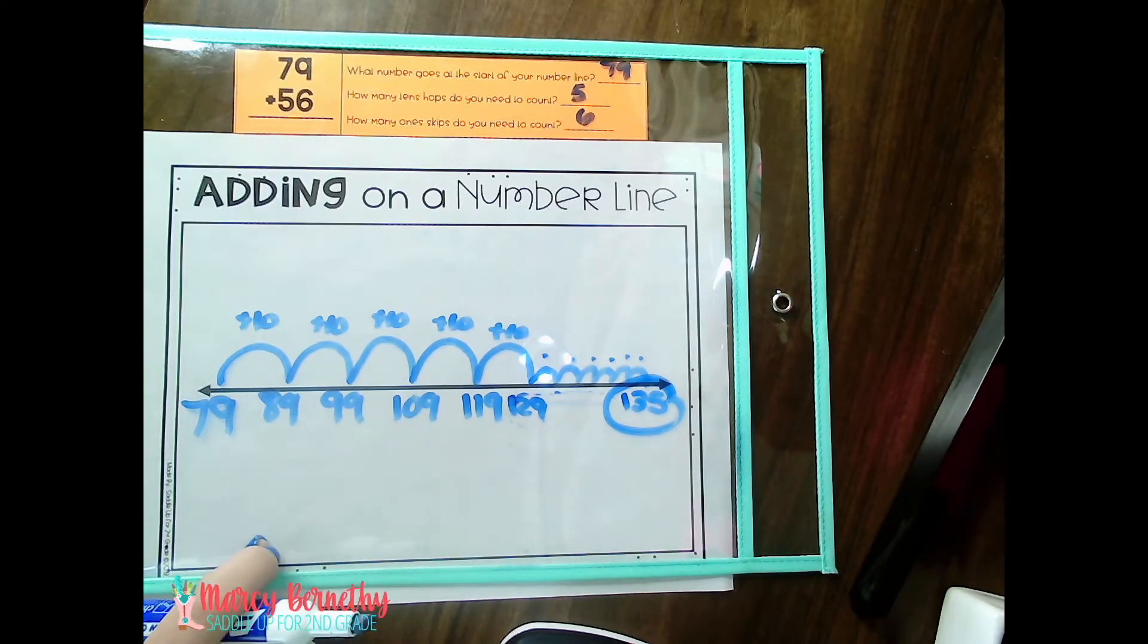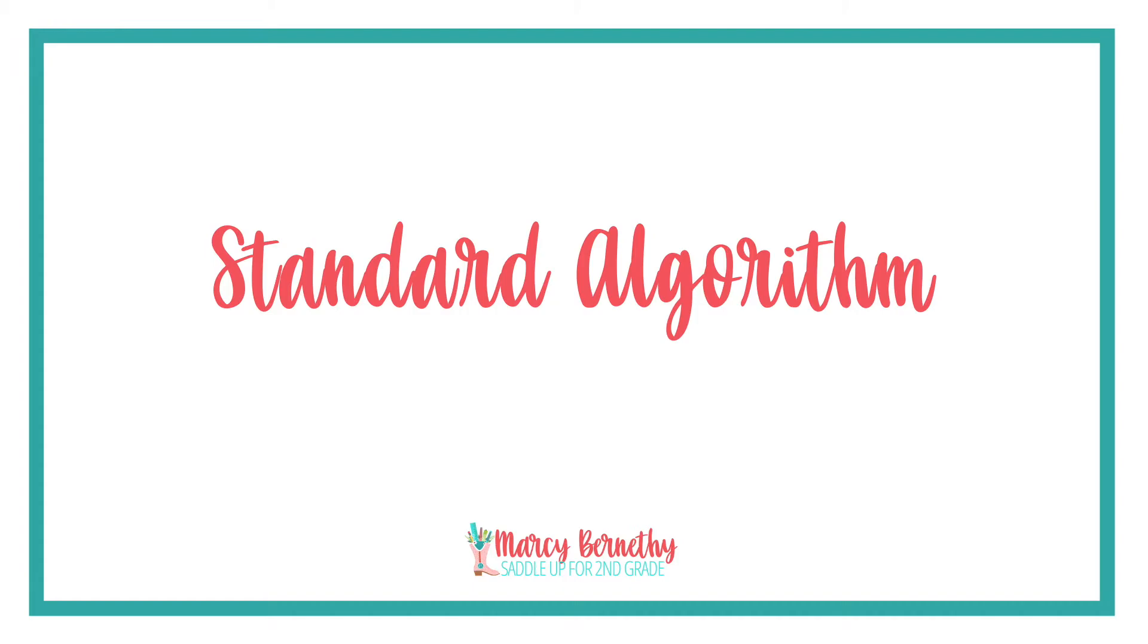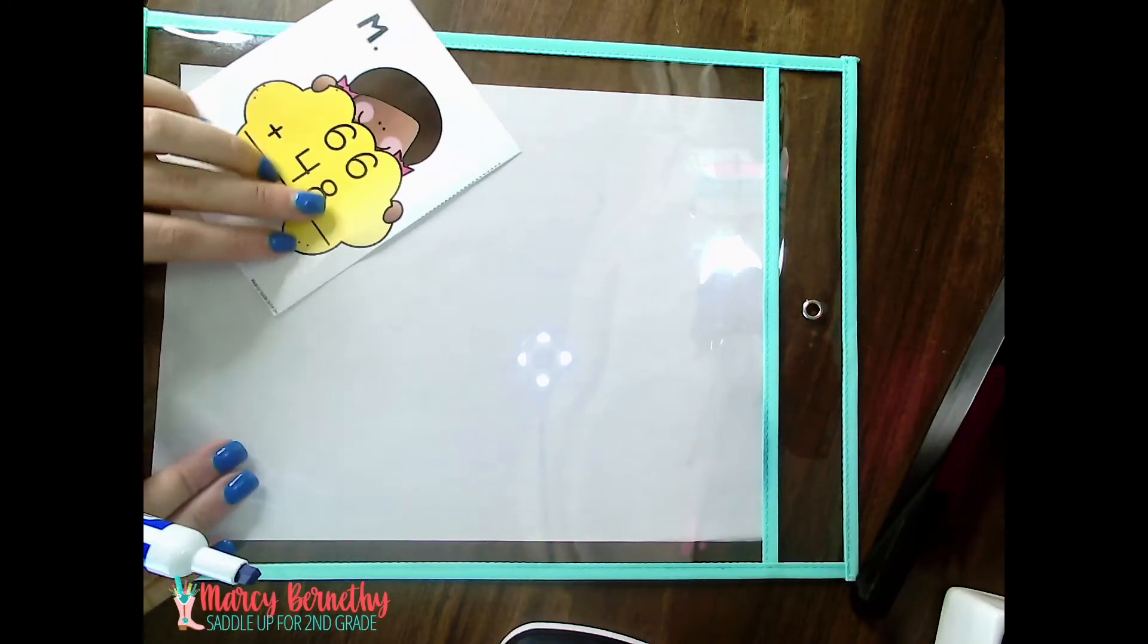So they know that the sum of 79 plus 56 is 135. And that is how you add on an open number line. Then the last strategy that I'm going to show you guys is the standard algorithm, which is probably the strategy that you're most familiar with. And it's probably how you were taught growing up. So this is going to also be the strategy that parents recognize the most. So let me show you how it works.